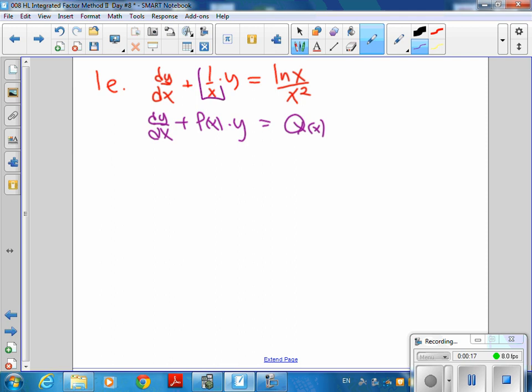So this is going to be my p of x, 1 over x, and this is going to be my q of x, which looks like a pretty nasty q of x, doesn't it? Looks like that's going to be pretty impossible, but it's not. It's actually going to be pretty good.